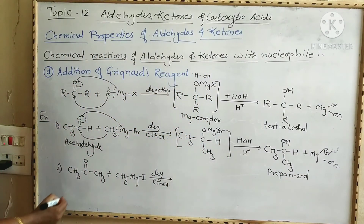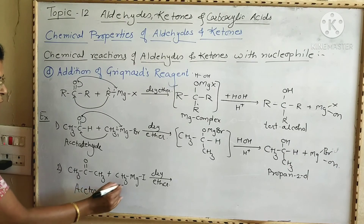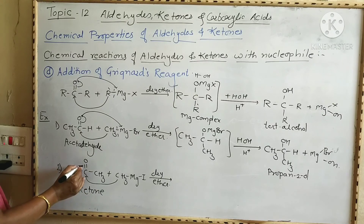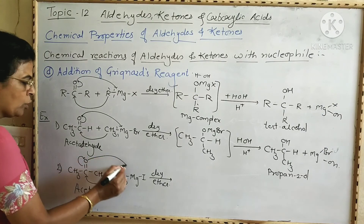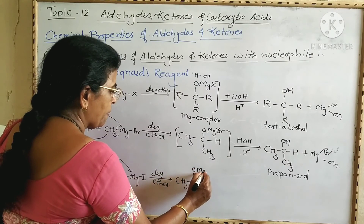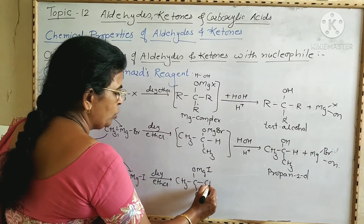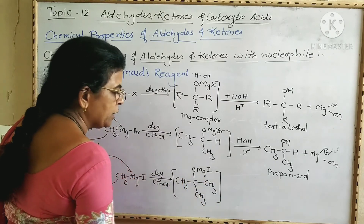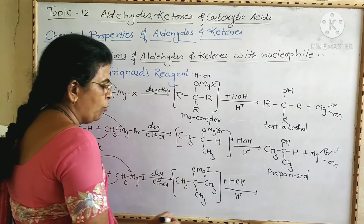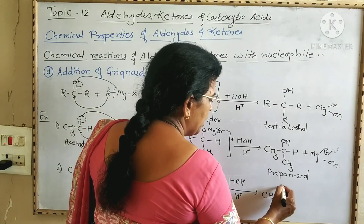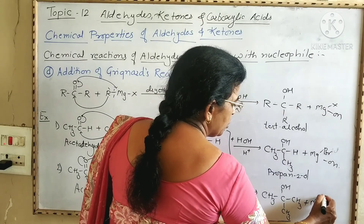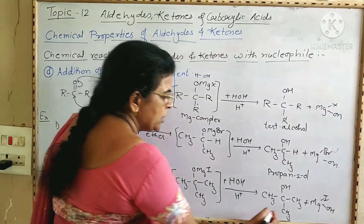The second example is with acetone. When acetone is treated with CH₃MgBr in the presence of dry ether, the CH₃ group gets attached to the carbonyl carbon, then the pi electrons shift onto the oxygen, and the oxygen gets attached to MgBr to form the magnesium complex CH₃-C(CH₃)(CH₃)-OMgBr. This magnesium complex undergoes hydrolysis in acidic medium to form CH₃-C(CH₃)(CH₃)-OH plus MgBrOH. This is tertiary butyl alcohol. In this way, aldehydes and ketones are converted into alcohols by using Grignard's reagent.